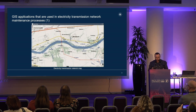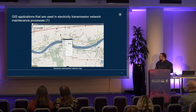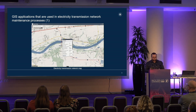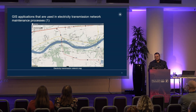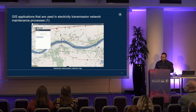The first application is the electricity transmission network map. It shows the electricity network with characteristics, so we can see crossings with railways, roads, and other utility networks. This map is used as a tool to help staff plan, order, or coordinate maintenance work.